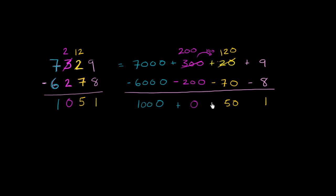So this is going to be 1,000 plus 0 plus 50 plus 1, which is the exact same thing as 1,051.